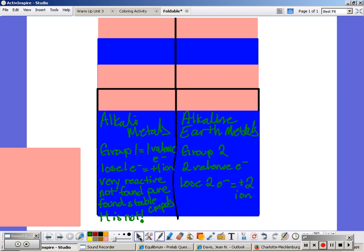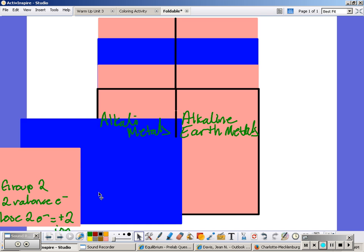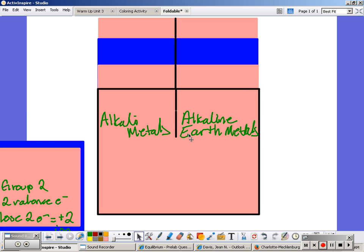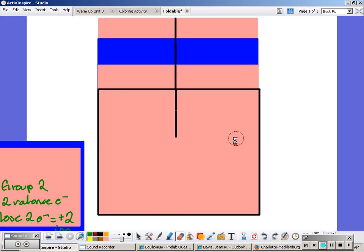If you go to the next fold and draw a straight line down, we're then going to title it transition metals and lanthanides and actinides. Then underneath where it's covered you want to list everything that you need to know about these two areas.